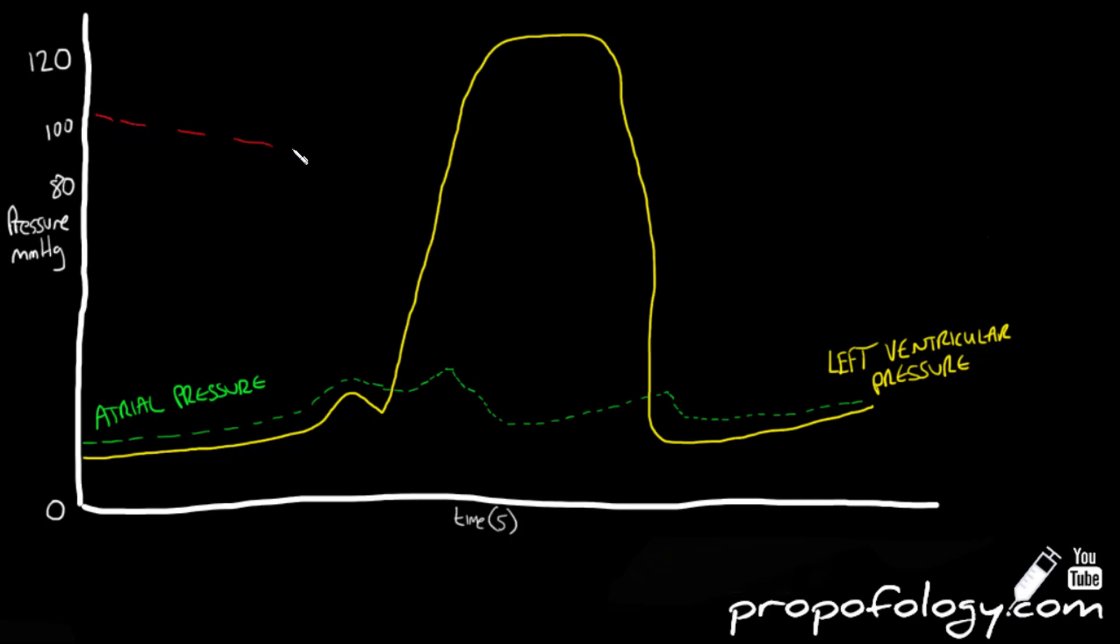The next line that's important to plot is one of aortic pressure. You can see the pressure is falling as the aortic valve is closed, so the blood is moving out of the aorta to supply the body's organs and tissues but it's not yet replaced by blood from the ventricles.